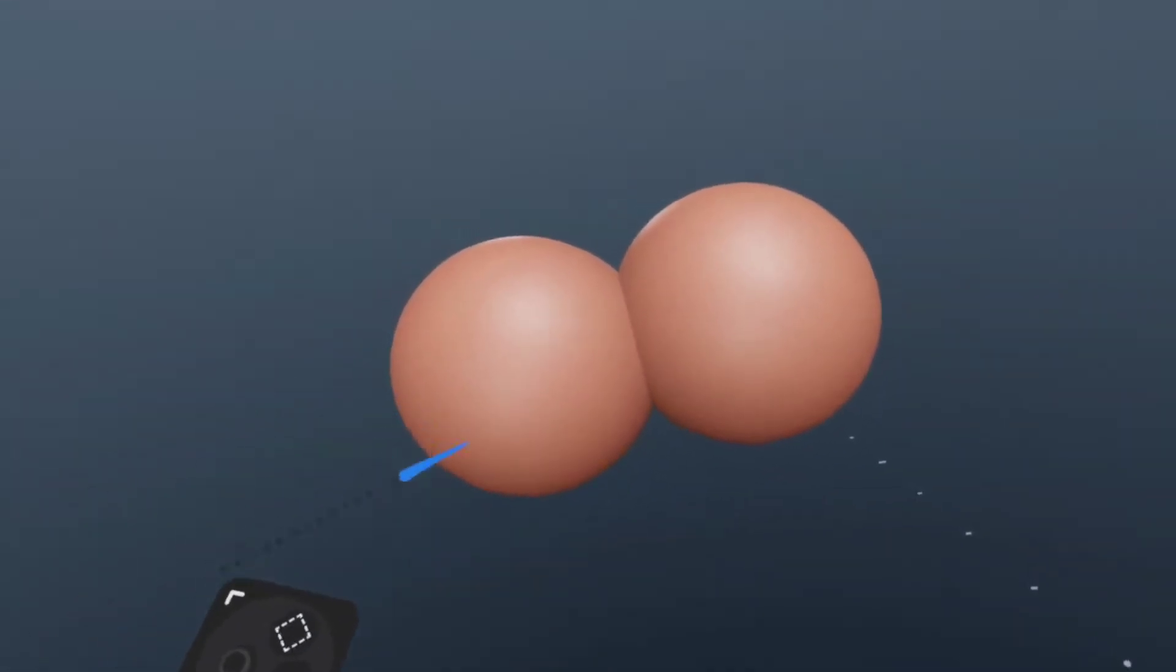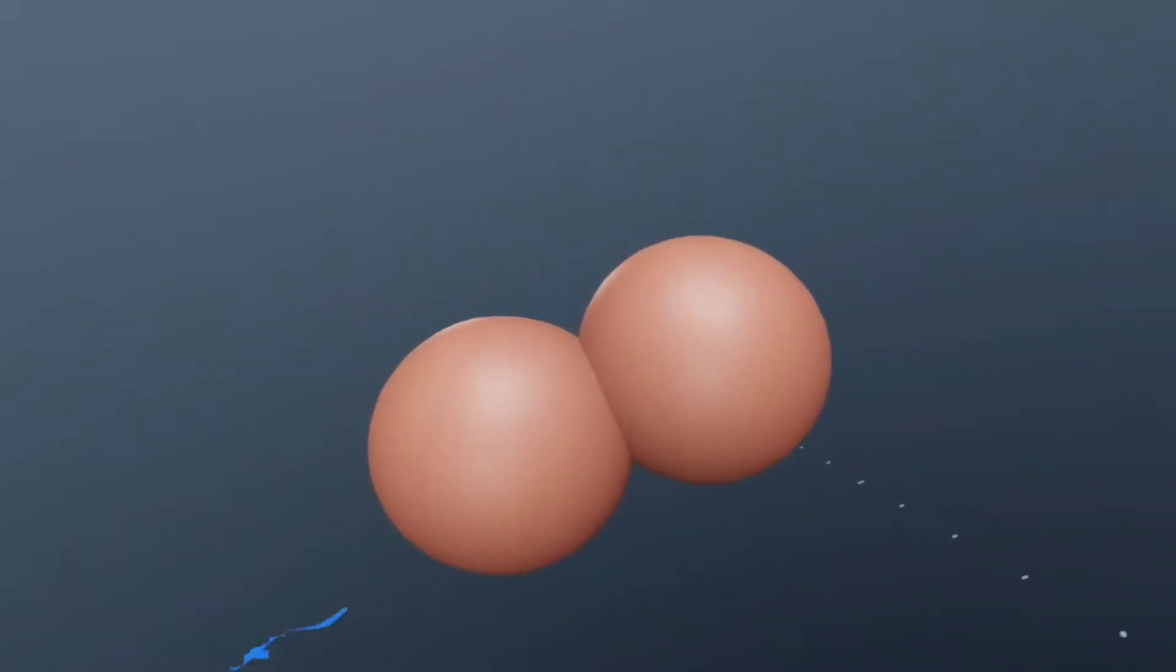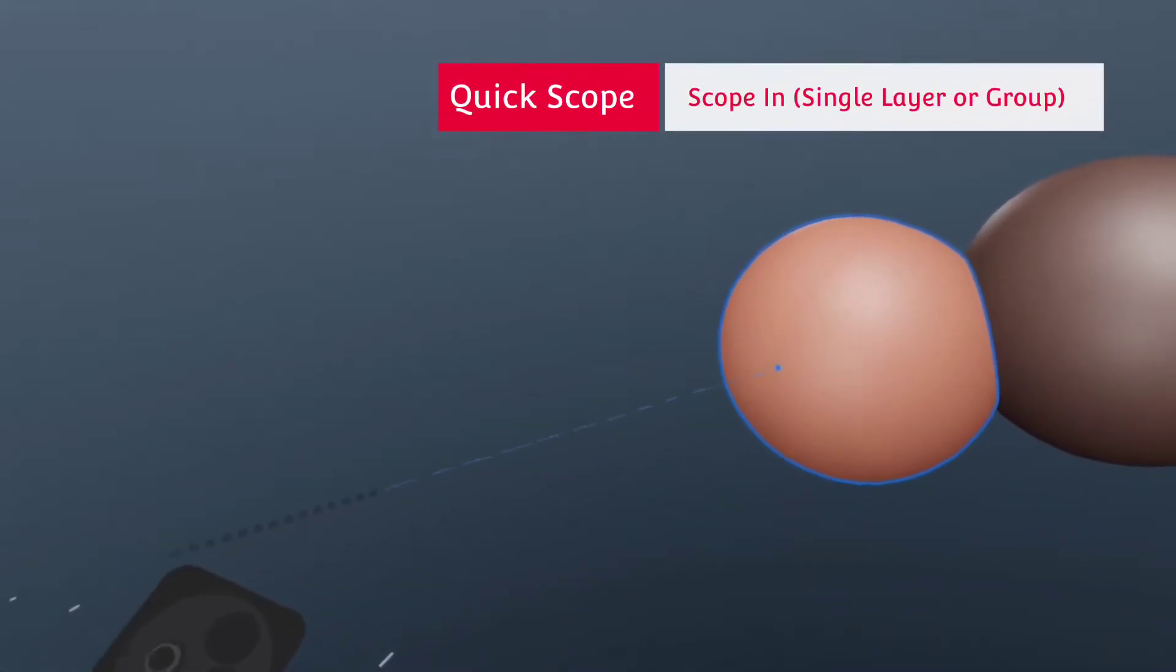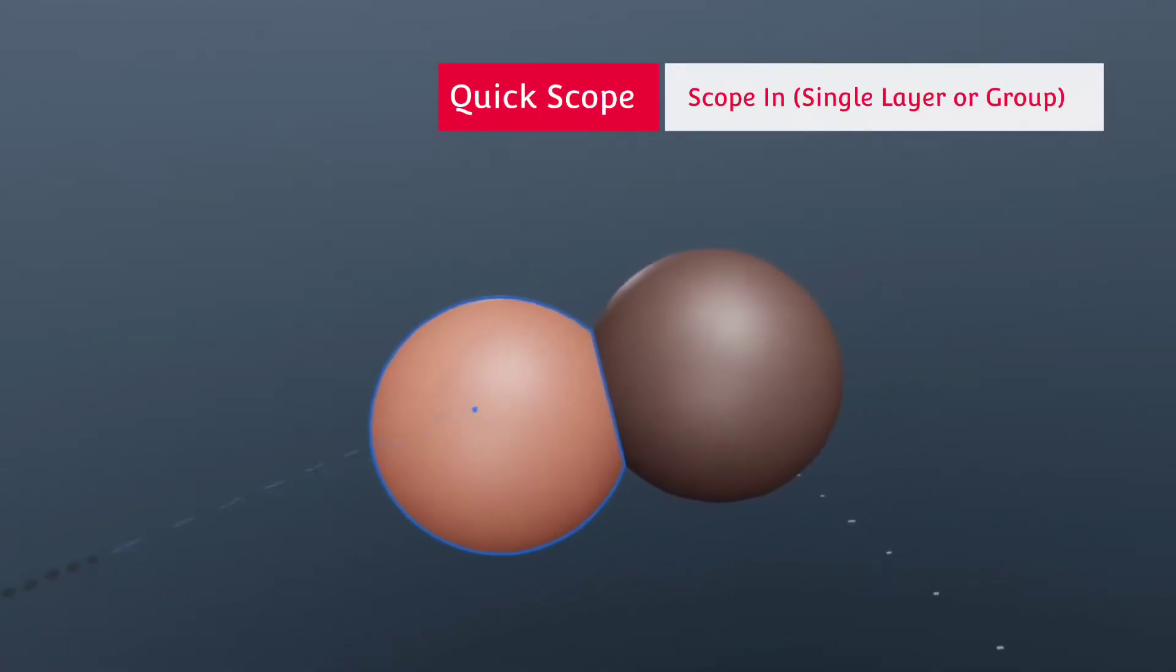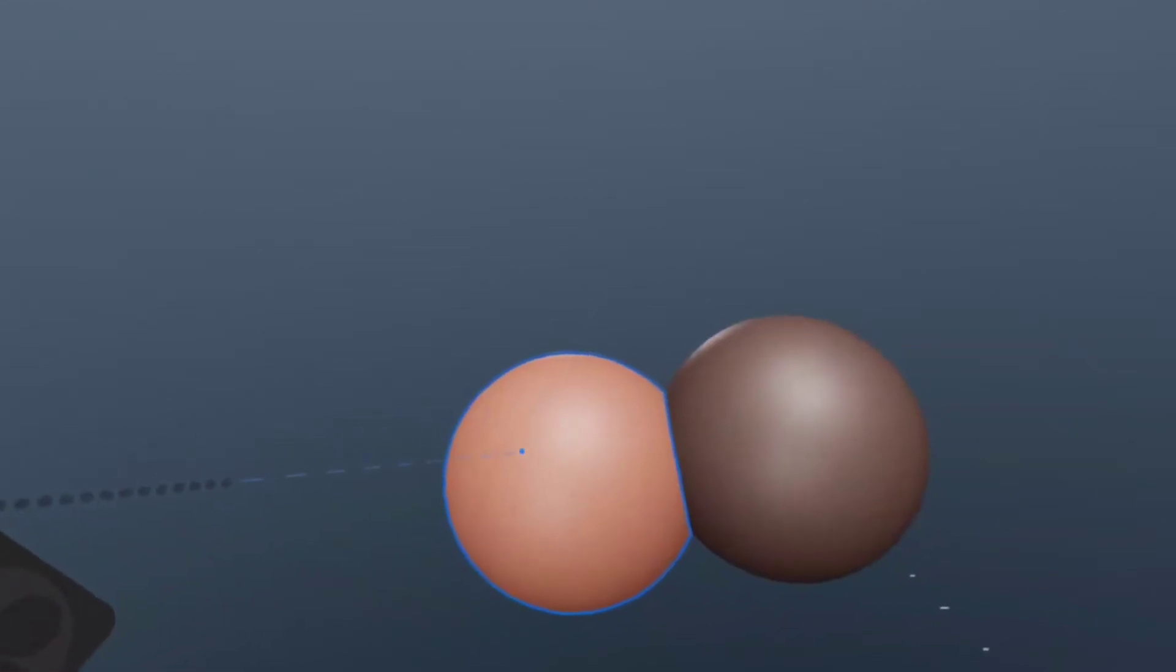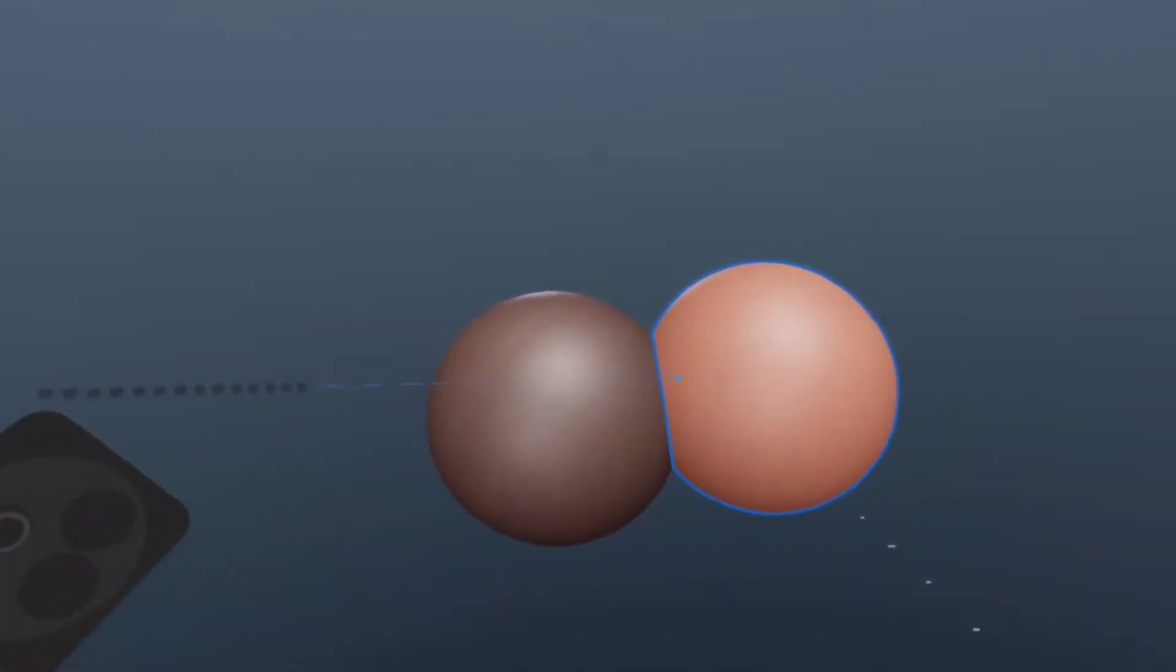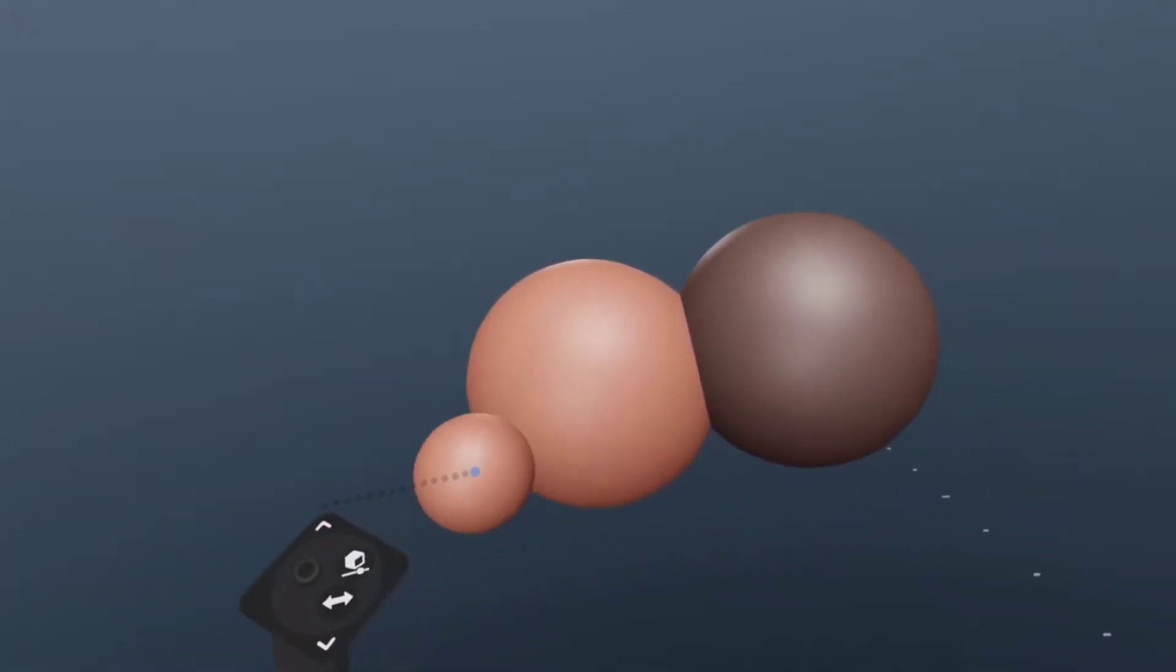So a couple of other things to point out while we're in this mode is that if you hold the joystick up on your offhand, it'll create this little dashed line. And what you can do is point to different layers with this. This will give you kind of a representation of what the different layers are and what options you have to select them. And you don't have to press anything if you just release that joystick. Now that layer is selected.